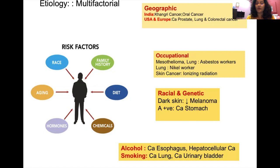High consumption of alcohol leads to carcinoma of the esophagus and hepatocellular carcinoma. Smoking leads to carcinoma of the lung and carcinoma of the urinary bladder. These are different etiological factors which increase a person's risk of cancer.